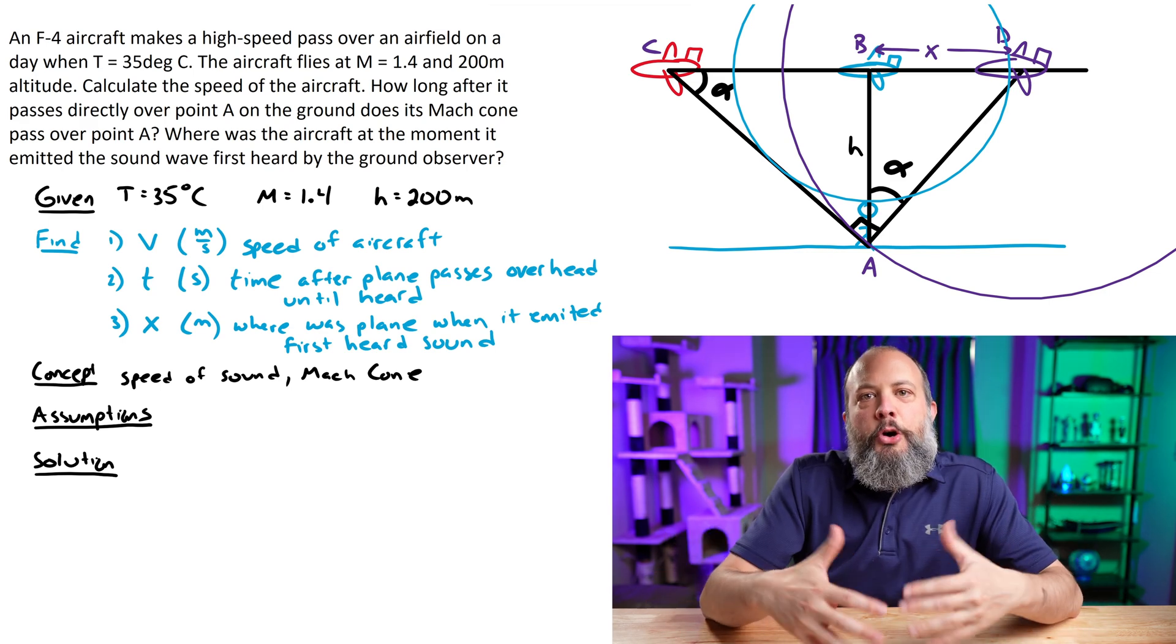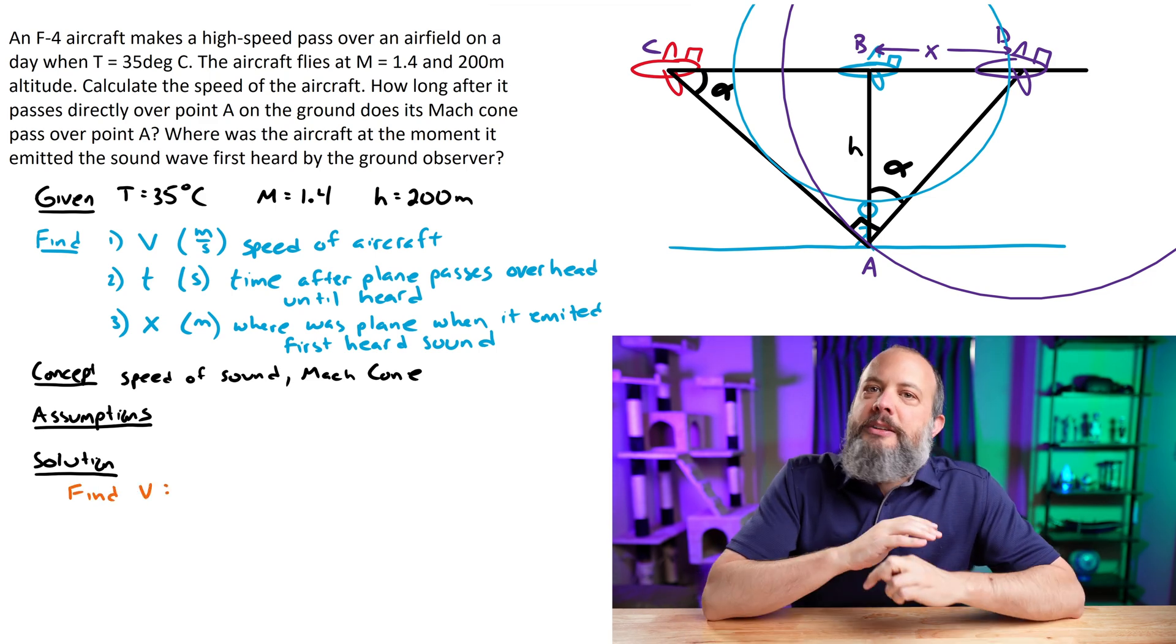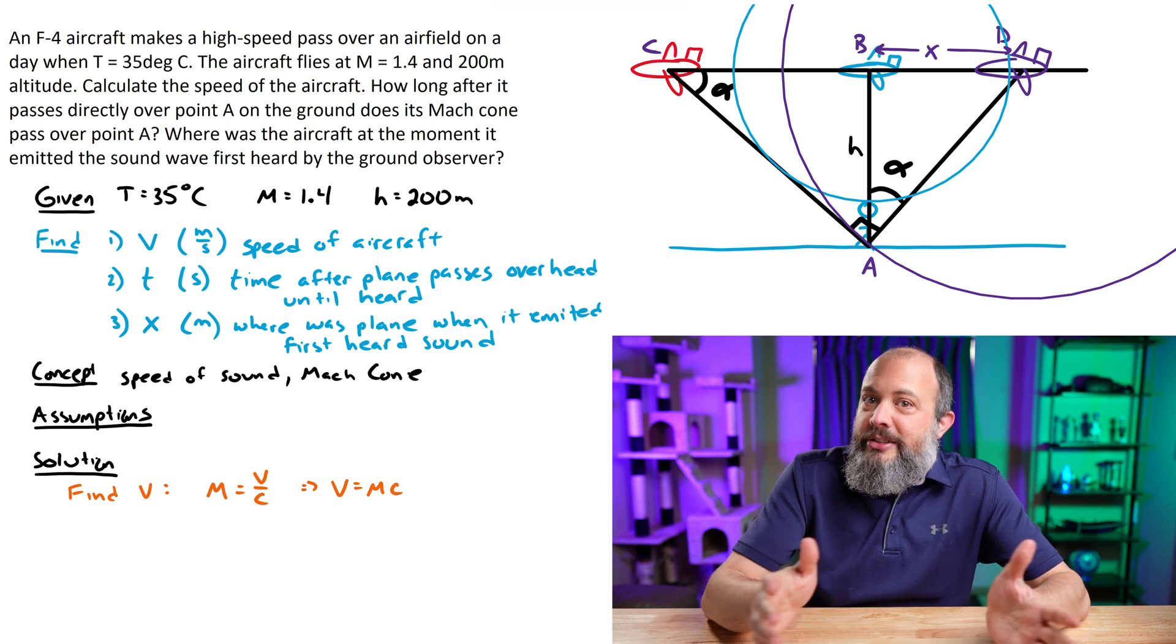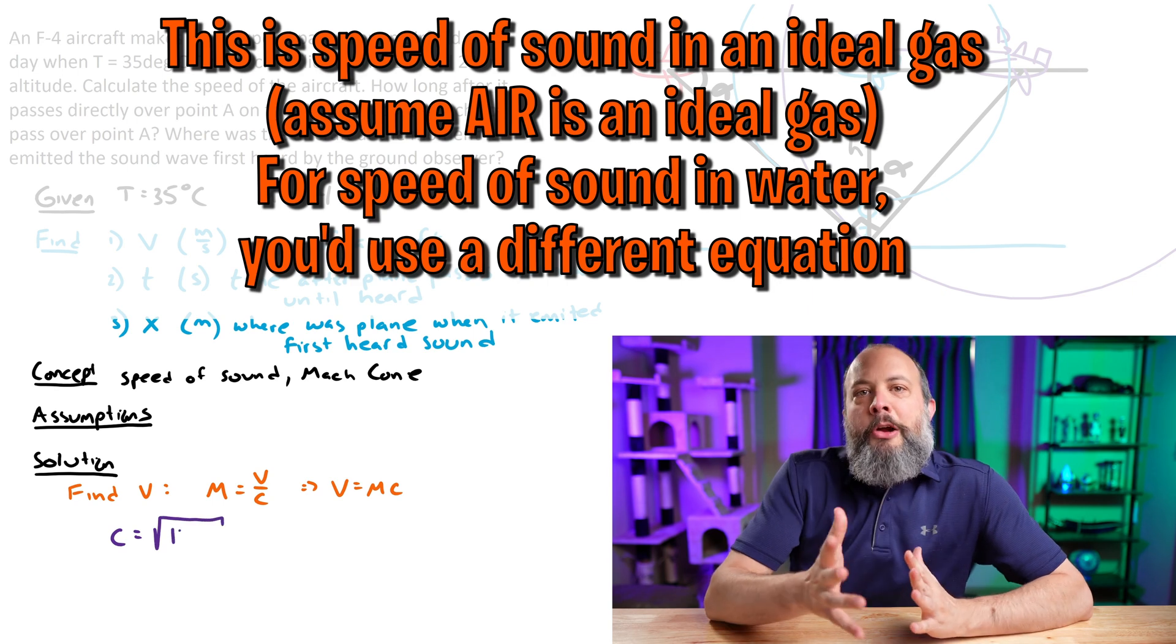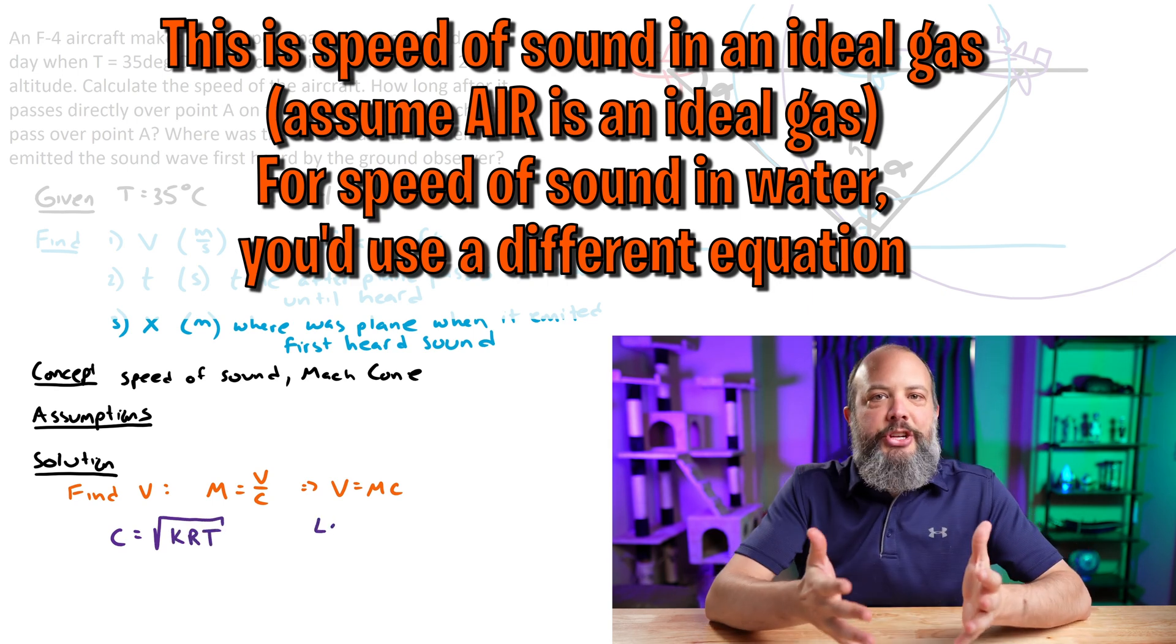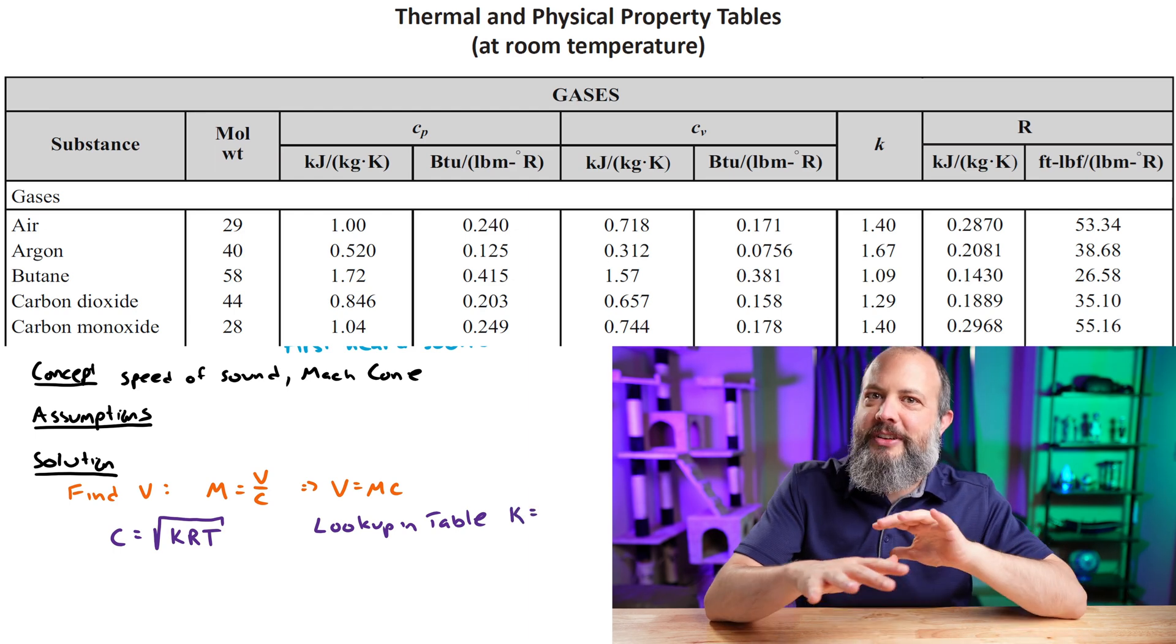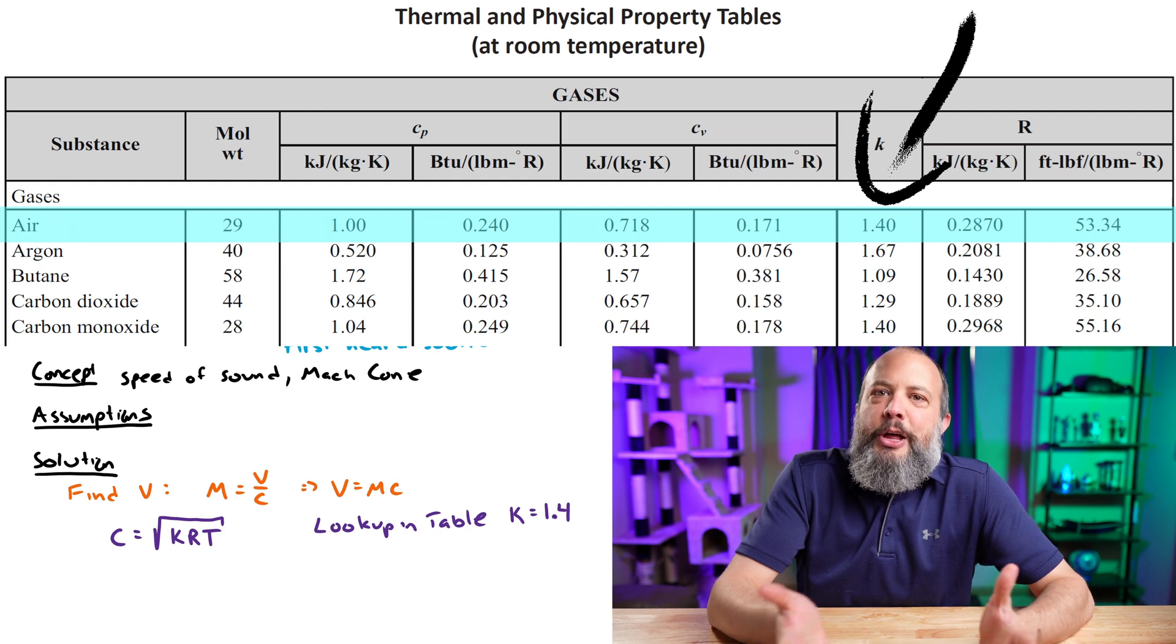Almost every compressible flow problem is going to basically always start with solving for the speed of sound. The speed of sound through air is not actually constant, it changes at different temperatures and altitudes. You get the speed of sound using the square root of K times R times T. K is the ratio between specific heat C_P and C_V. This is just something you look up in a table. For air, we use a value of 1.4.